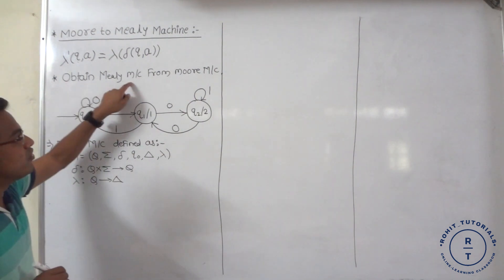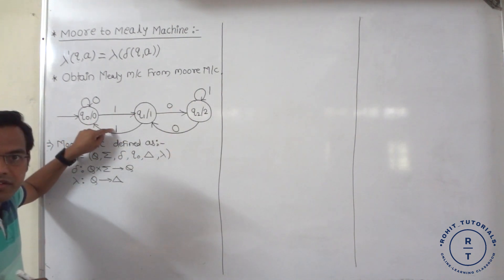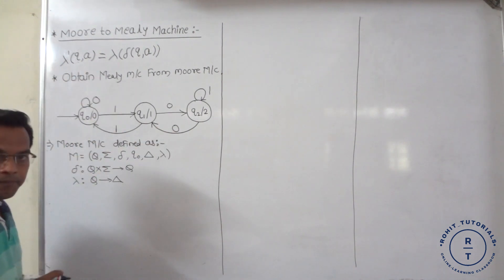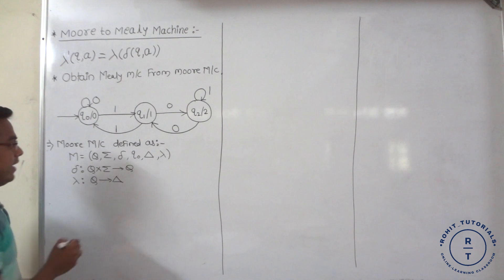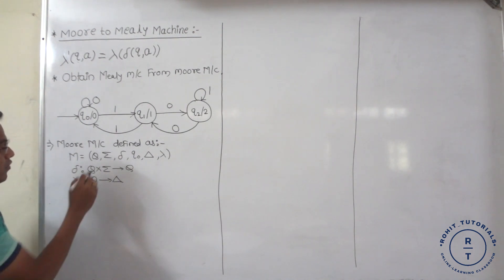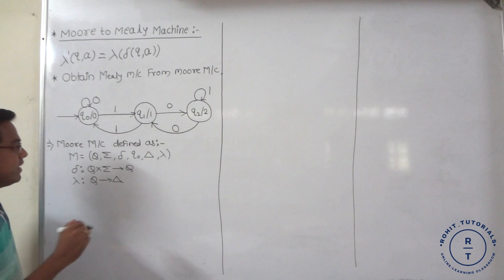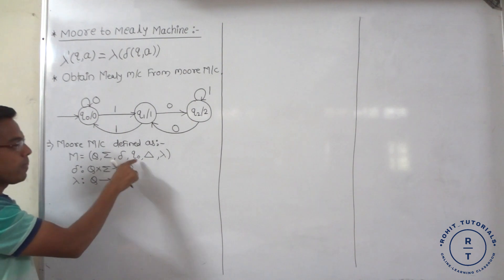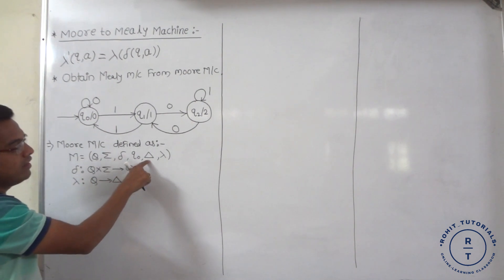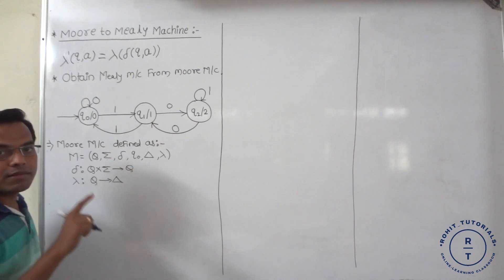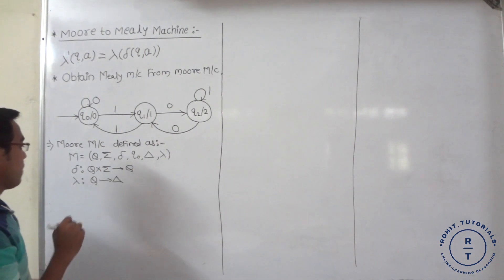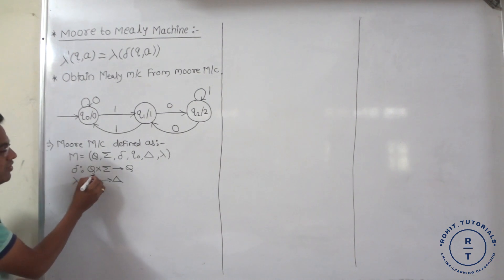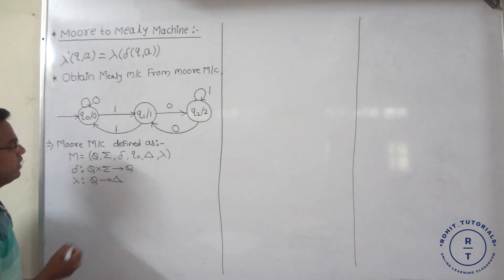Obtain Mealy machine from Moore machine. The Moore machine is given. We have to convert this Moore machine into Mealy machine with the help of this formula. The Moore machine is defined as a 6-tuple consisting of: capital Q (set of states), set of input symbols represented by sigma, transition function, initial state, output symbols, and the machine function or output function. This transition function represents: whenever at any state, any input symbol occurs, it goes to the next state.